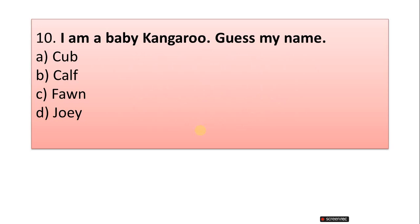Question 10: I am a baby kangaroo, guess my name. A. Cub, B. Calf, C. Fawn, D. Joey. Correct answer is option D, Joey.